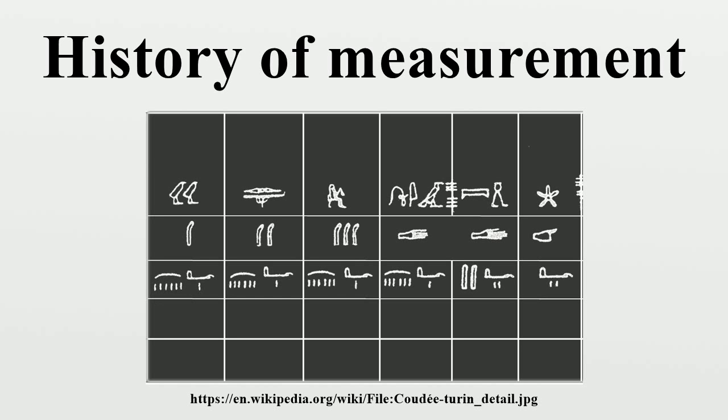The common cubit was the length of the forearm from the elbow to the tip of the middle finger. It was divided into the span of the hand, the palm or width of the hand, and the digit or width of the middle finger. The royal cubit, which was a standard cubit enhanced by an extra palm, thus seven palms or 28 digits long, was used in constructing buildings and monuments and in surveying.